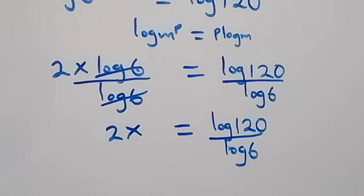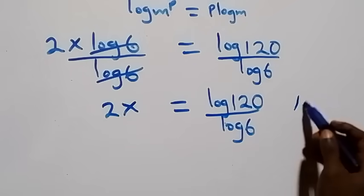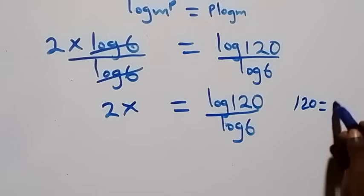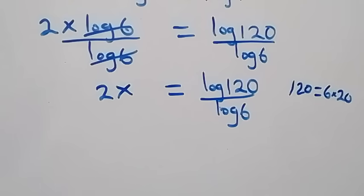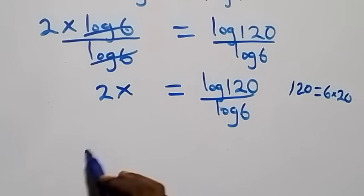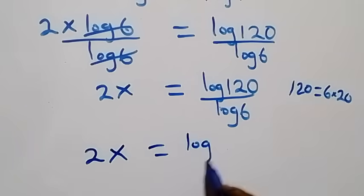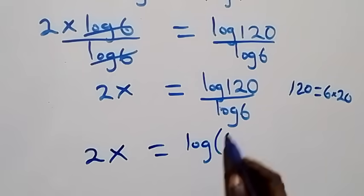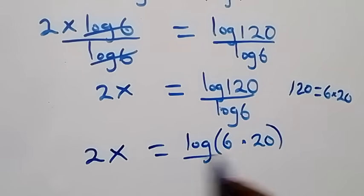From here we can express 120 as 6 times 20. So what we have becomes 2x equals log of 6 times 20, over log 6.